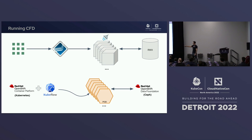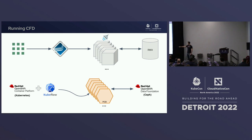I used OpenShift — that happens to be the Red Hat Kubernetes distribution. We have a storage product called Open Data Foundation that gives me RWX storage. And then we had to do stuff in the middle with Kubeflow.